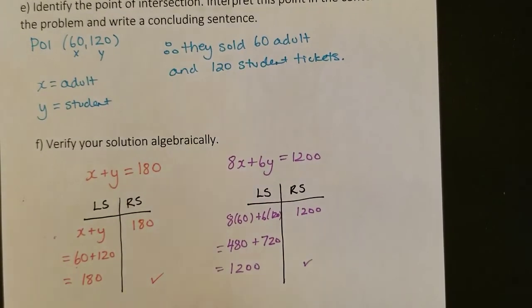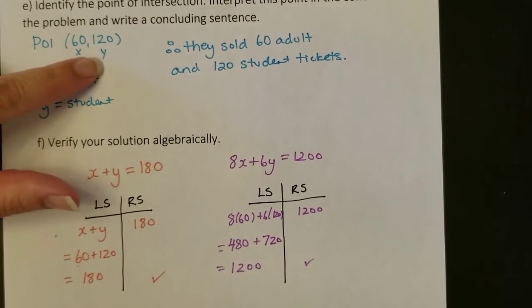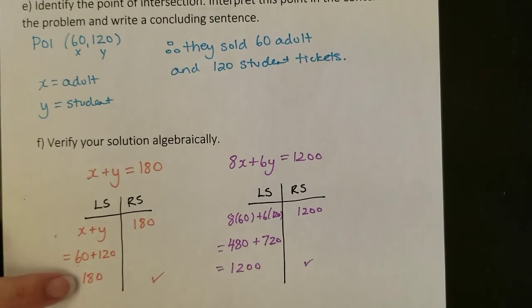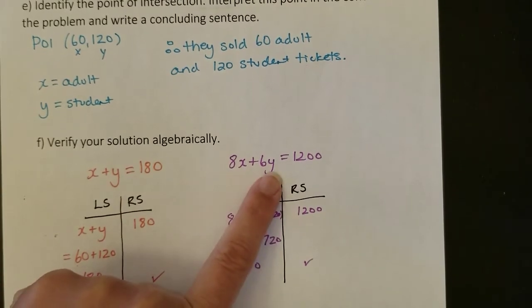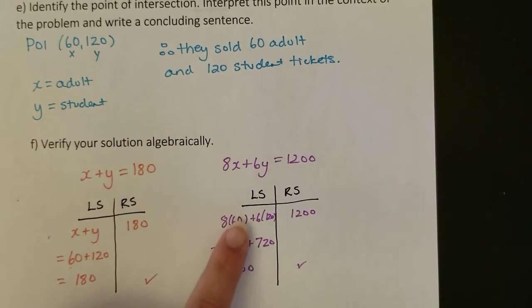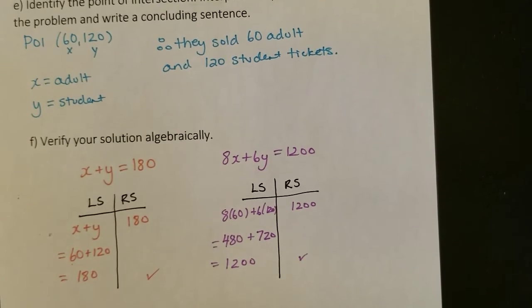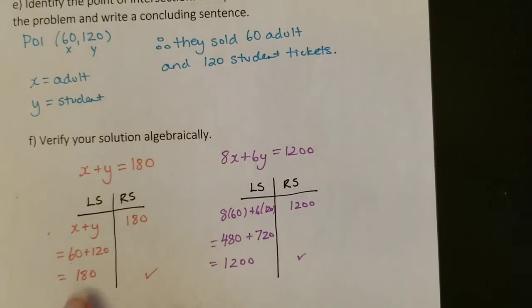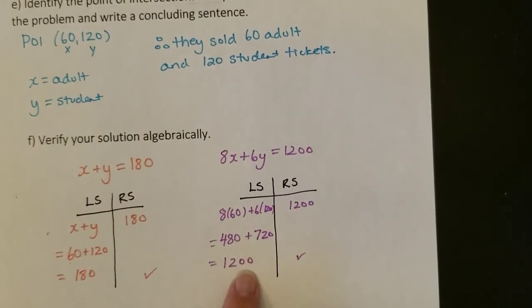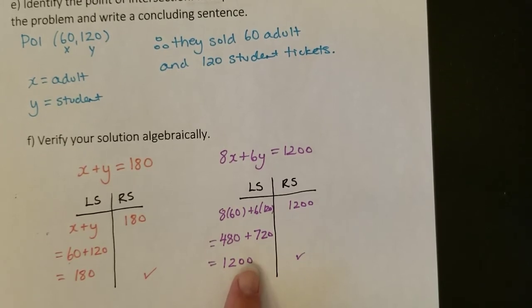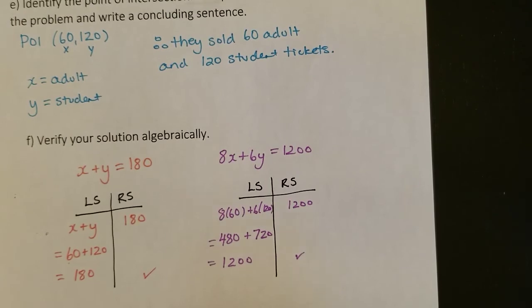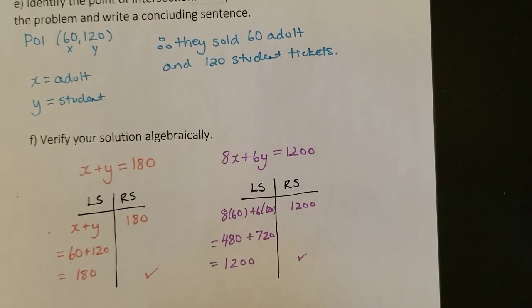The last step asks us to verify our solution algebraically. So here we want to put in this X equals 60, Y equals 120. I'm going to put it into both equations and check that it equals the right-hand side. So I'm going to sub in to my original two equations from part B, sub in X equals 60, Y equals 120, and double check that it equals the right-hand side. That's a good check to make sure that you've graphed accurately. If you got this was a little bit off, like maybe this was 1,100, that would be a sign that you probably did not graph your purple line as accurately as you needed to. So that would be a hint for you to go back and double check that work.